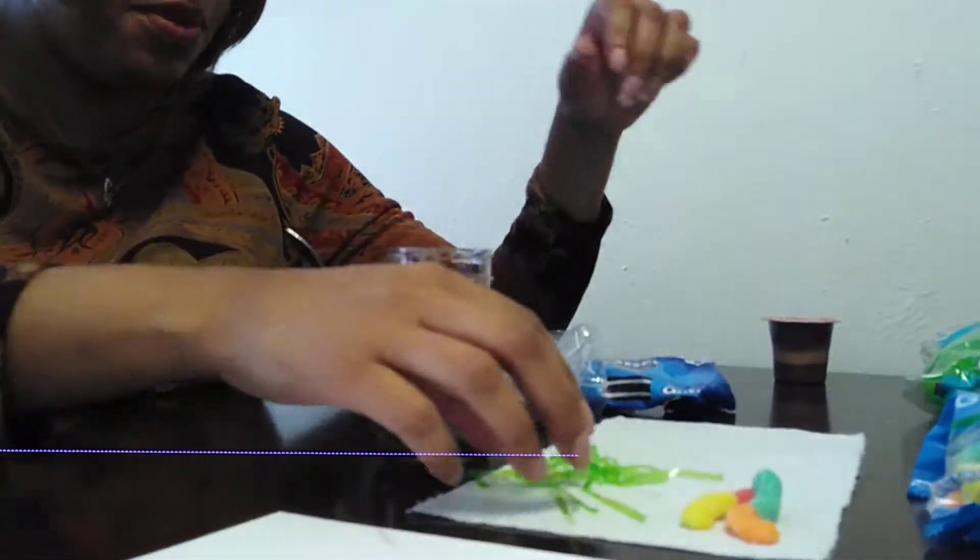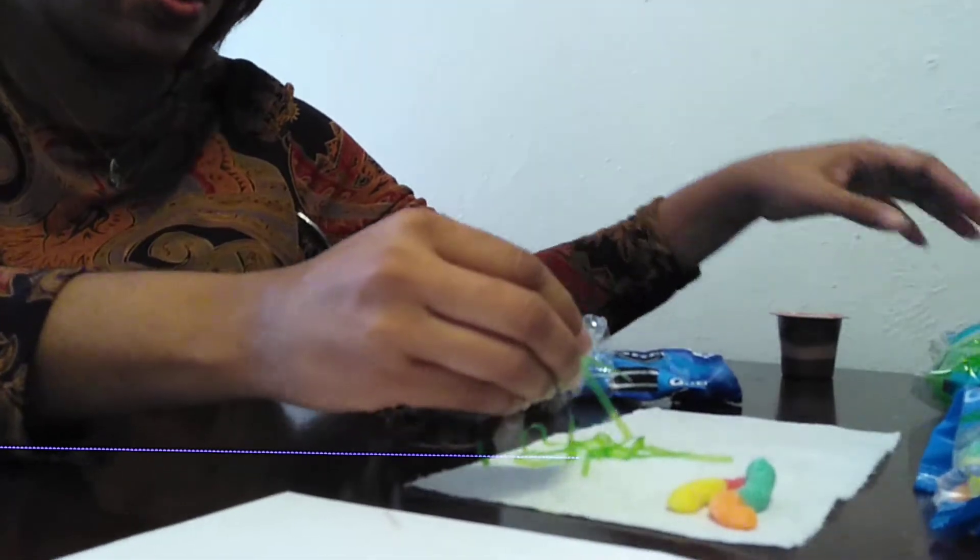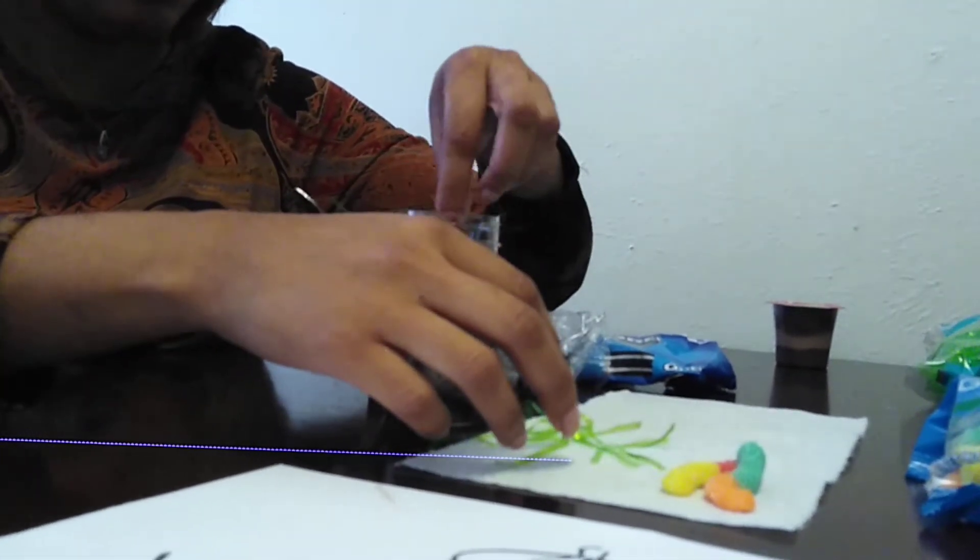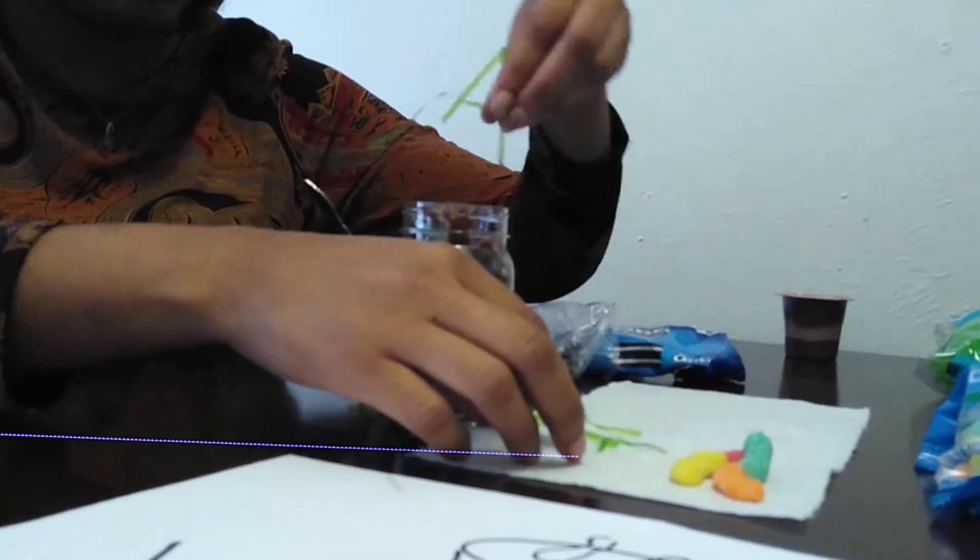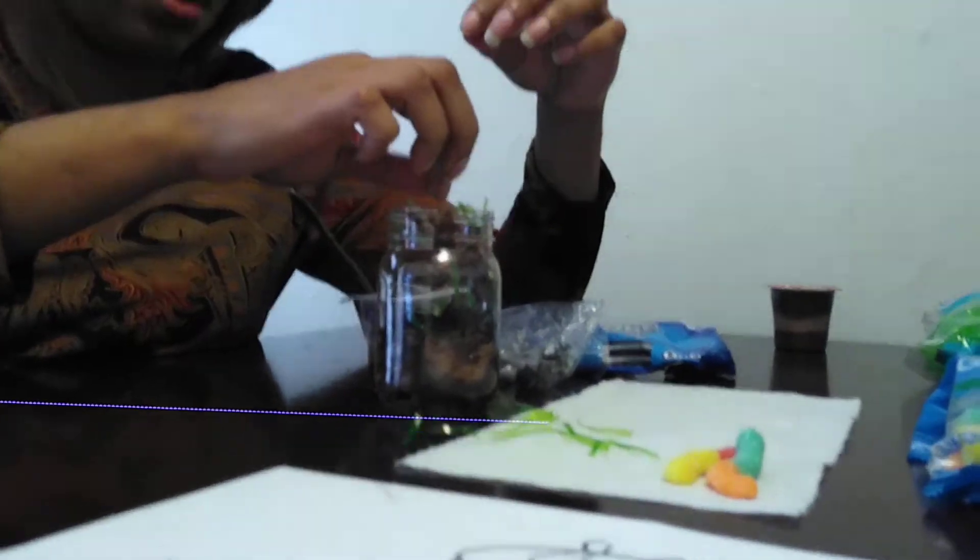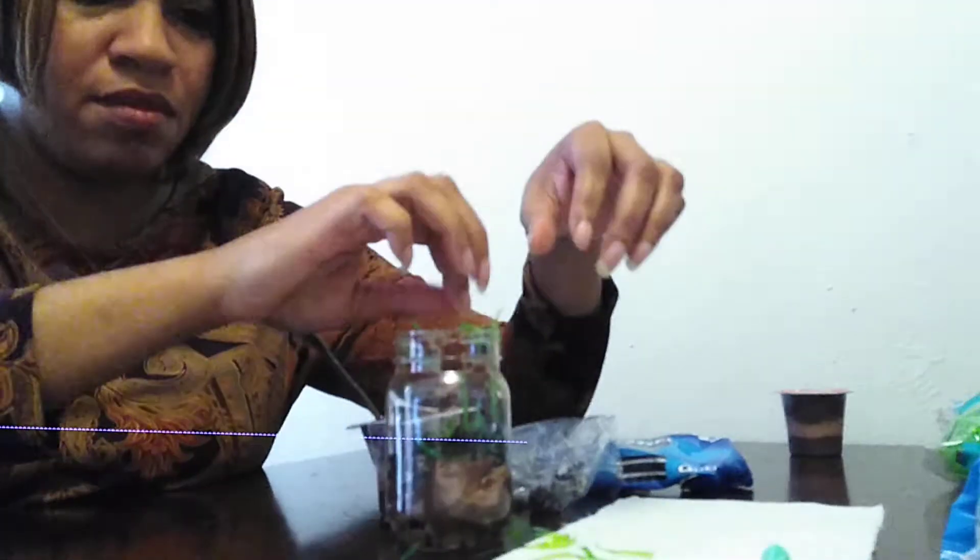Then we have our organic material, which is going to be our grass. We don't want to put too much in there, because I'm going to have to try that. And we have our worms.